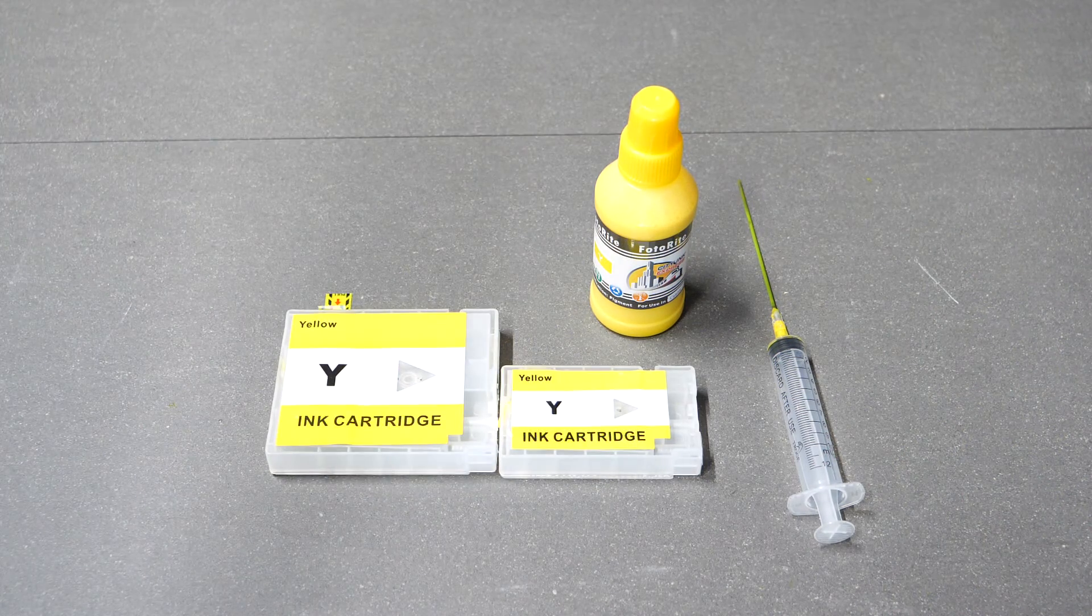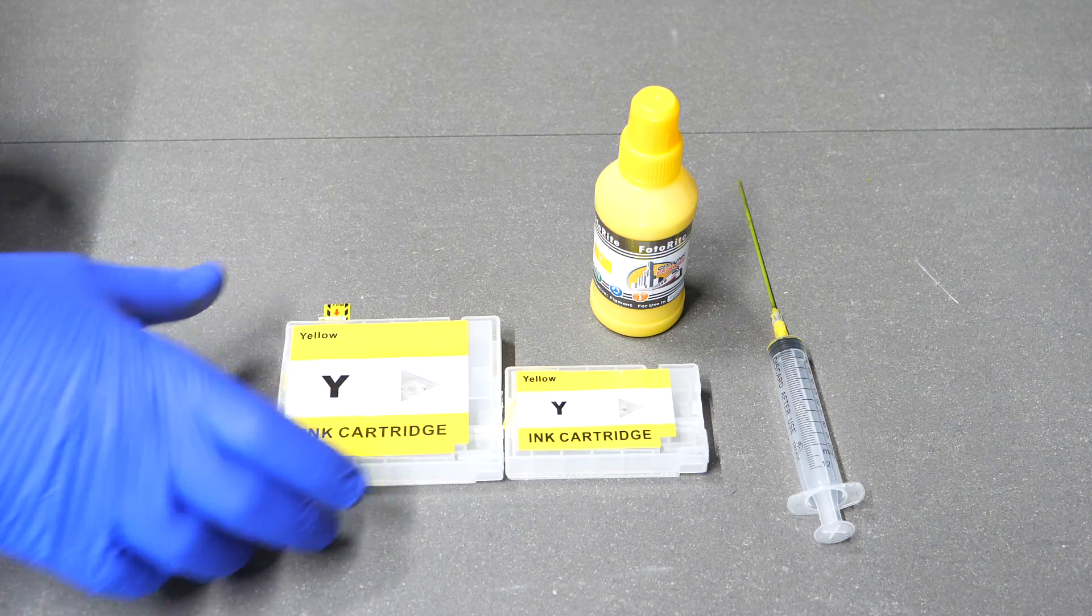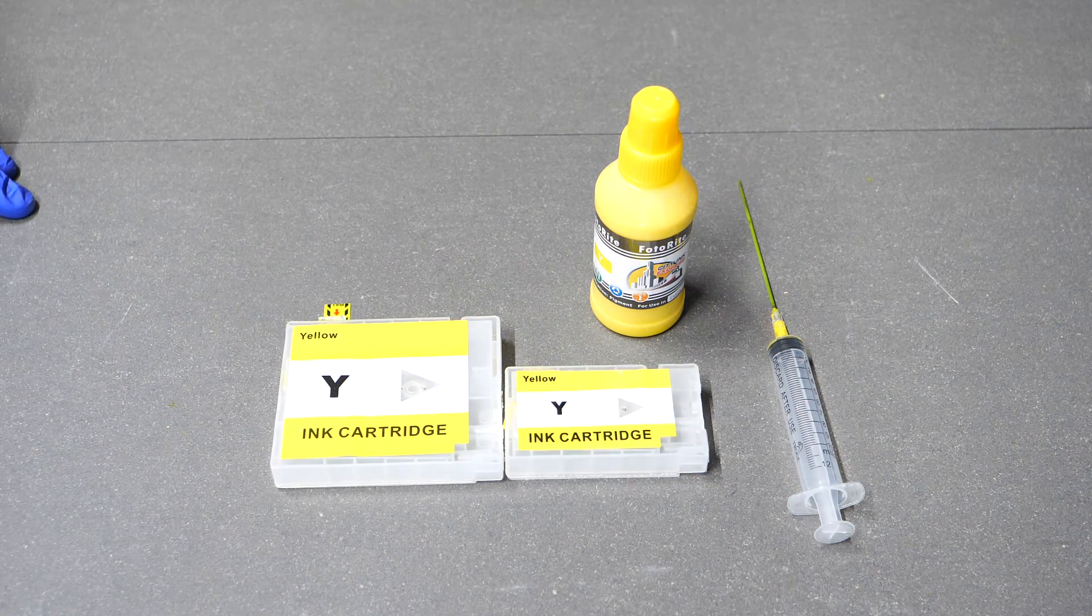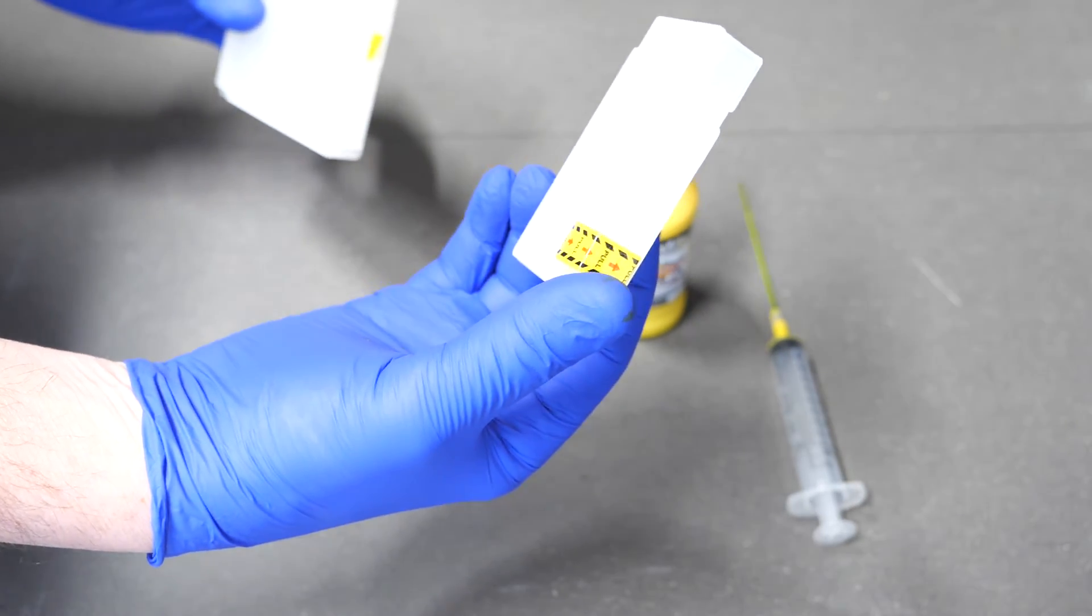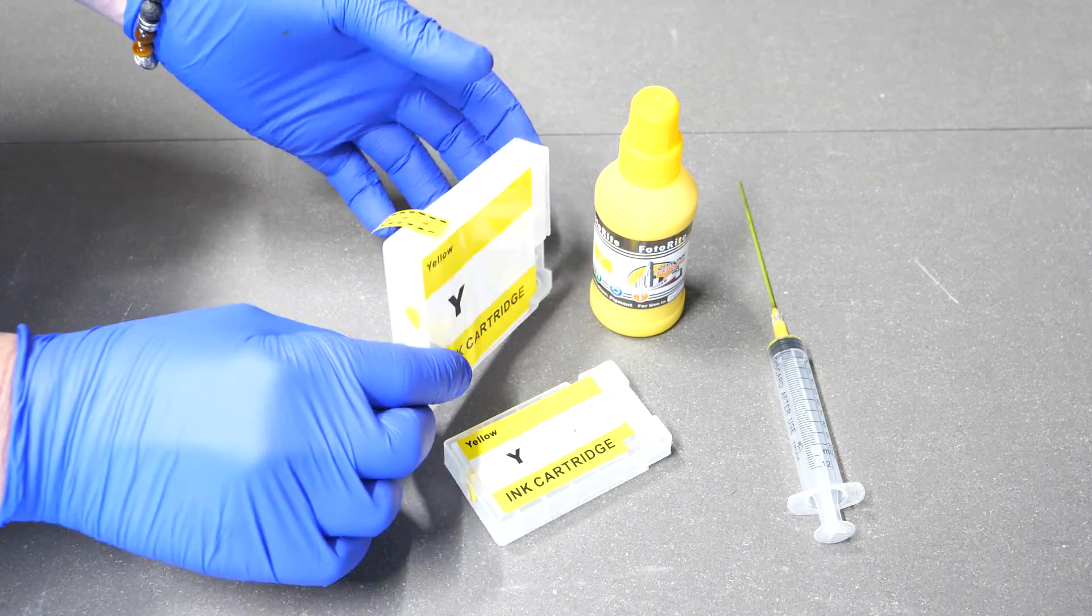We've got two different versions of cartridge here. We have the PGI 1500, which is the smaller one, and the PGI 2500, the larger one. These are a little bit older, they're older generation. These are the newer ones for printers that are still currently sold.